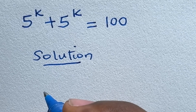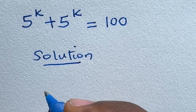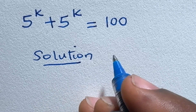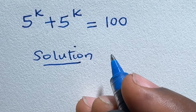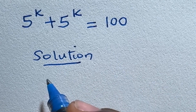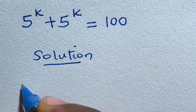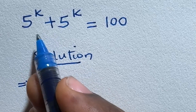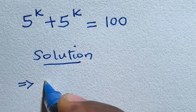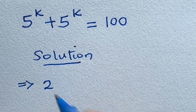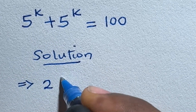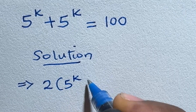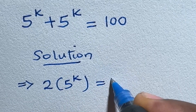In this problem, given that 5 to the power of k plus 5 to the power of k is equal to 100, this means that we have 2 times 5 raised to the power of k is equal to 100.